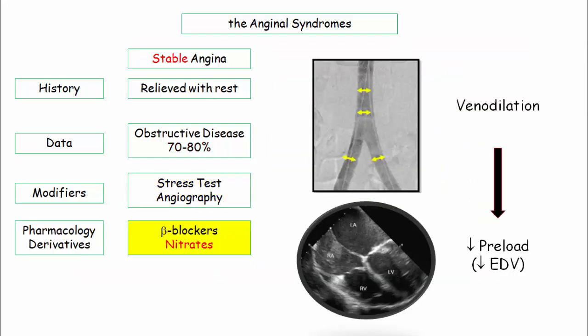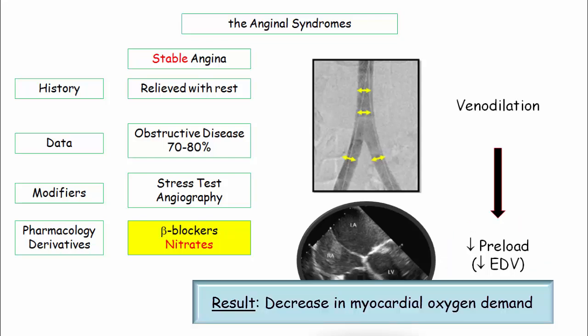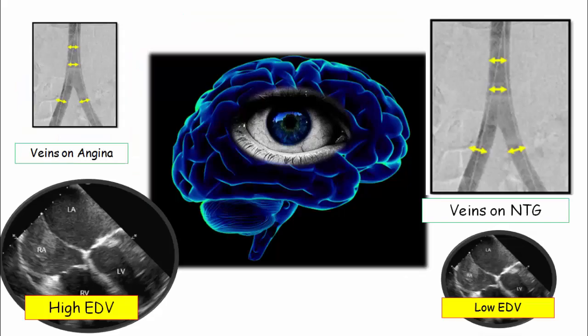A brief word on pharmacotherapy: nitrates are important anti-anginals. Whereas nitrates are considered vasodilators, they preferentially dilate large veins — think of them as venodilators. The result of dilating large veins is a decrease in preload, also described as end-diastolic volume, thereby decreasing myocardial oxygen demand. This is the mechanism by which they are used as anti-anginals. Whereas they do cause some dilation of coronary vessels, this is an insignificant function. Dilation of large veins with reduction in preload should be etched in your memory.